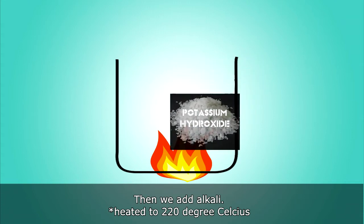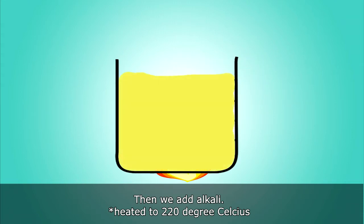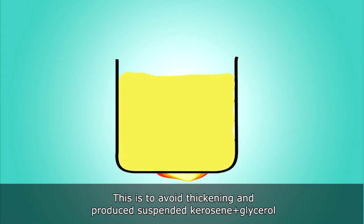Then we add alkali, heated to 220 degrees Celsius. This is to avoid thickening and produce suspended kerosene and glycerol.